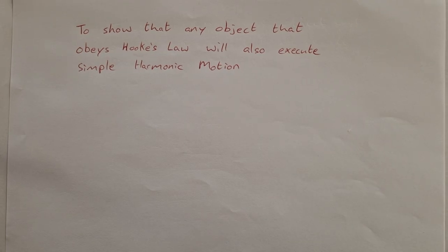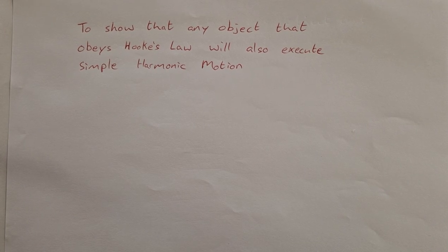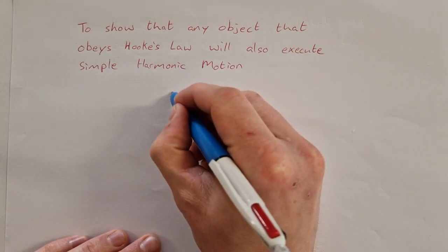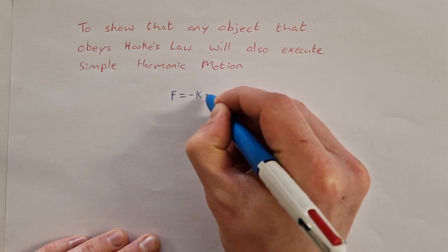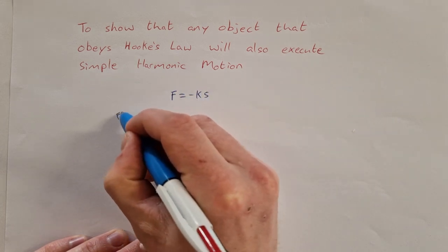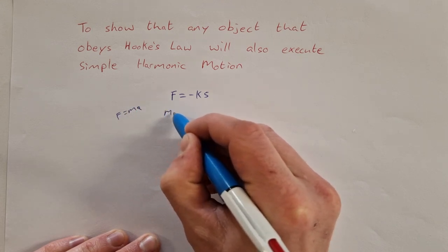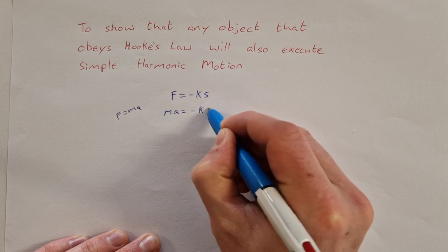In this video we're going to show that any object that obeys Hooke's Law will also execute simple harmonic motion. We'll start with the formula for Hooke's Law, which is F equals minus k times s. We know that F equals mA, so I can substitute in: mA equals minus k times s.